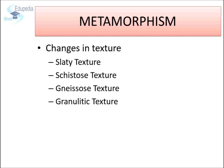Metamorphic rocks may possess one of the following textures. Slaty texture: a rock is said to have a slaty texture when it splits into thin flat sheets. Schistose texture: a rock is said to have a schistose texture if it breaks into thin flakes. Gneissose texture: a rock is said to have a gneissose texture when the stronger mineral crystals have retained their dimensions but the other minerals exhibit a foliated structure. Granulitic texture: a rock is said to possess a granulitic texture if it has almost equidimensional mineral crystals interlocked with each other, giving the rock a sugary appearance.